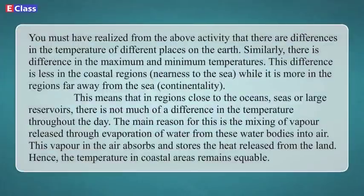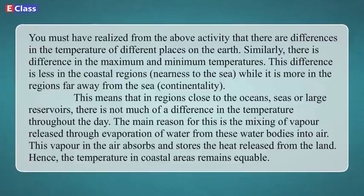From the above activity, you must have realized that there are differences in the temperature of different places on the earth. The difference between maximum and minimum temperatures is less in the coastal regions (nearness to the sea) while it is more in regions far from the sea (continentality). In regions close to the oceans, seas or large reservoirs, there is not much difference in the temperature throughout the day. The main reason is the mixing of vapour released through evaporation of water from these water bodies into the air. This vapour absorbs and stores the heat released from the land; hence, the temperature in coastal areas remains equable.